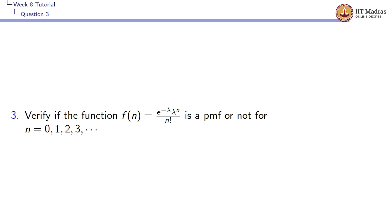Let us look at the third question in the tutorial. We have been asked to verify if the function f(n) = e^(-λ) · λ^n / n! is a PMF or not, for n = 0, 1, 2, 3, and so on. There are two conditions for this to be a PMF.